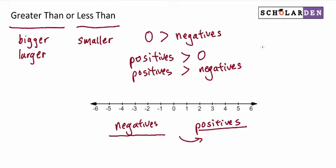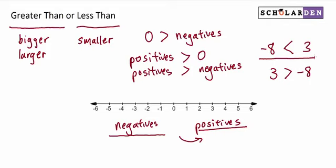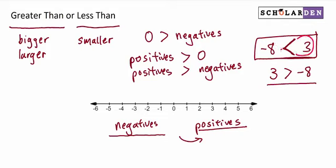Let's pick a random negative number, negative 8, and a random positive number, 3. We can be guaranteed that 3 is greater than negative 8, because 3 is positive. So: 3 is greater than negative 8. This leads us into less than, which is simply the opposite of greater than. Everything we said about greater than — the opposite is true for less than. So if 3 is greater than negative 8, that means negative 8 is less than 3. Notice that the open end of the symbol is by the big number, and the small end is by the smaller number.